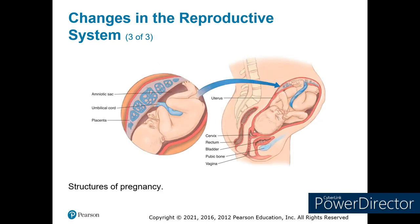The placenta attaches to the uterine wall and provides the nutritional connection to the mother, with a very high capillary count. Typically it forms on the upper side of the uterus. If it forms on the lower side, that is an issue we will have to deal with during delivery. As the uterus increases in size, it puts pressure on the bladder, which is why frequent urination is a common symptom of pregnancy.